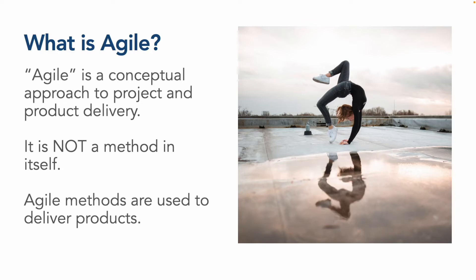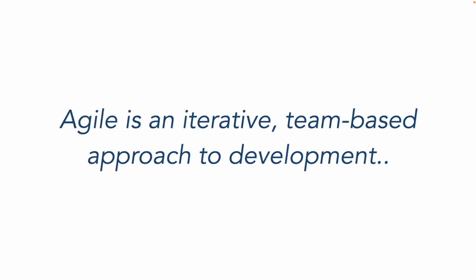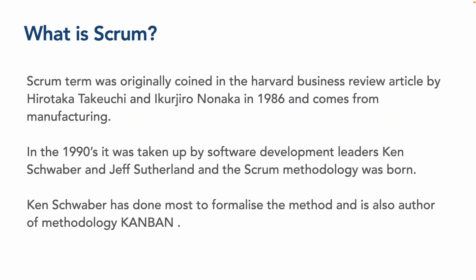What is agile? Agile is essentially a conceptual approach to project and product delivery — it's not actually a method in itself, and that's something people often confuse. Agile methods like Scrum and Kanban are used to deliver products. Agile is essentially an iterative, team-based approach to development.